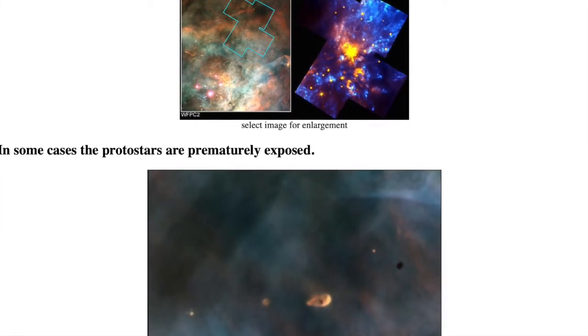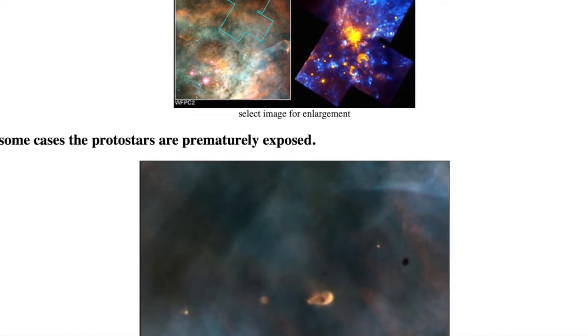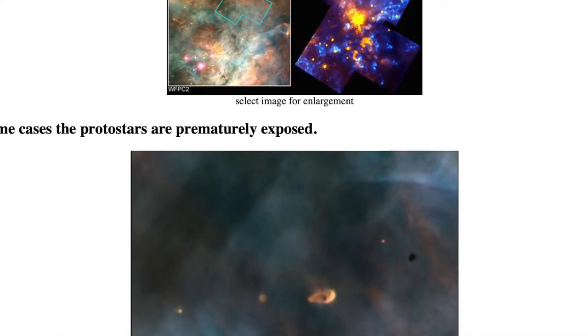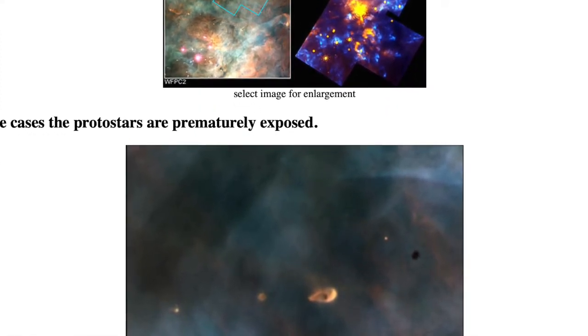In some cases, the protostars are prematurely exposed by the strong ultraviolet emission and winds from nearby O and B stars. That means we can observe them in regular visible light. We see the dust disks in various alignments from our point of view. Planets can form from these dust disks.